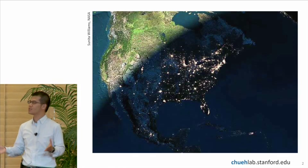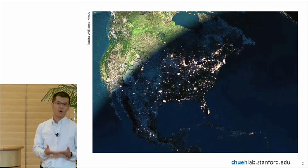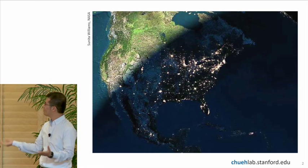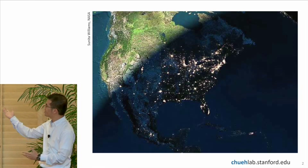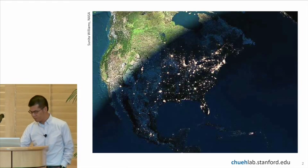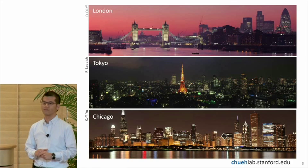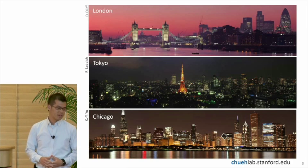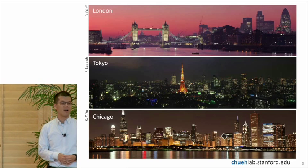So I always like to show this photo just because it's fun, and it also highlights the problem with sunlight. So solar energy is a funny business because it doesn't shine everywhere. It doesn't shine all the time. And if you look at the population distribution versus solar resource distribution, it's also greatly mismatched. So you have London, Tokyo, and Chicago.